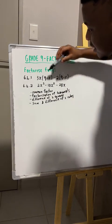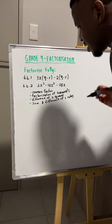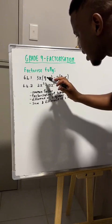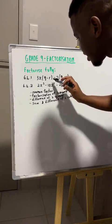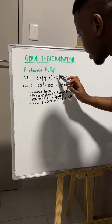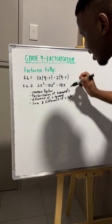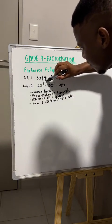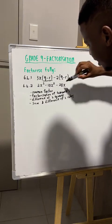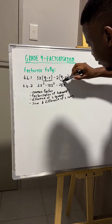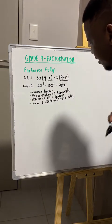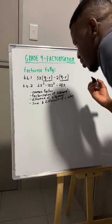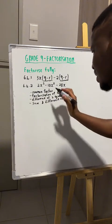Now let's consider the questions that we have. For the first question, we are given 3x multiplied by (q minus r) minus 2 into (q minus r). Already you can see that for your first term you have a factor of q minus r, and for your second term you also have a factor of q minus r. So that is your common factor.